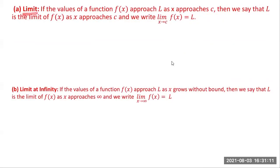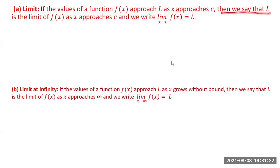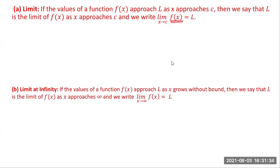What do we mean by a limit? This is the formal statement: if the values of a function f(x) approaches L as x approaches c, then we say that L is the limit of f(x) as x approaches c, and we write this limit statement — limit as x approaches c of f(x) is equal to L.